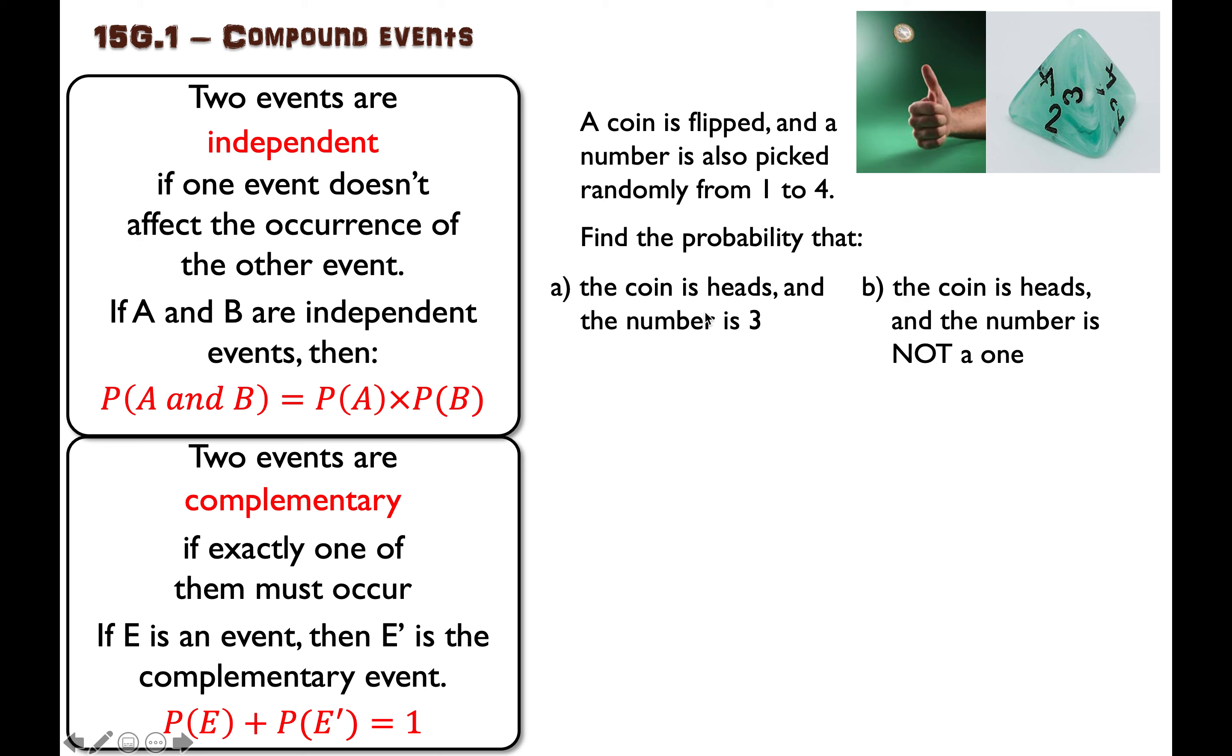Now we could use a two dimensional grid here or a tree diagram, but I want to show you how this rule can help us. These two events are independent. They have nothing to do with each other.